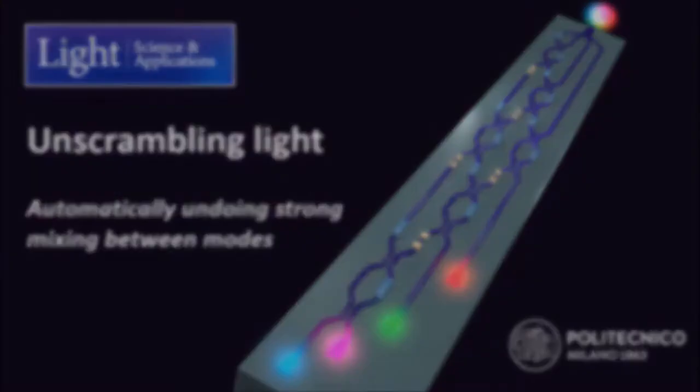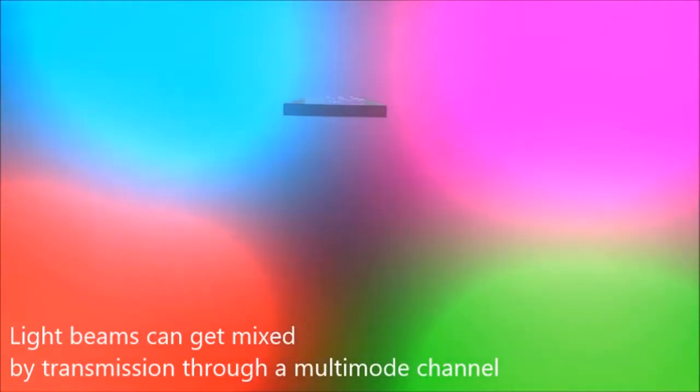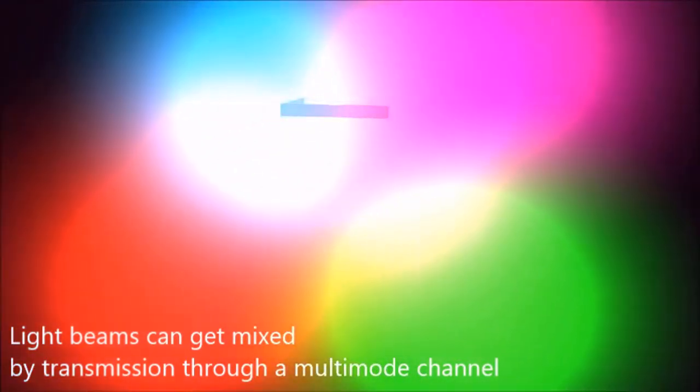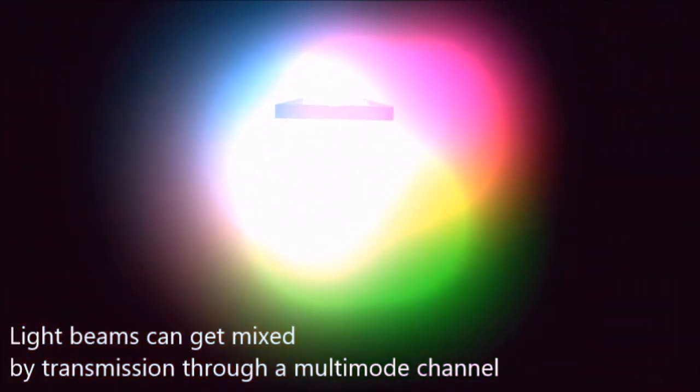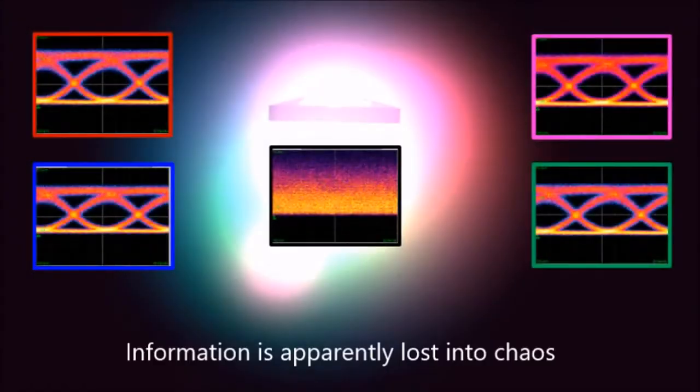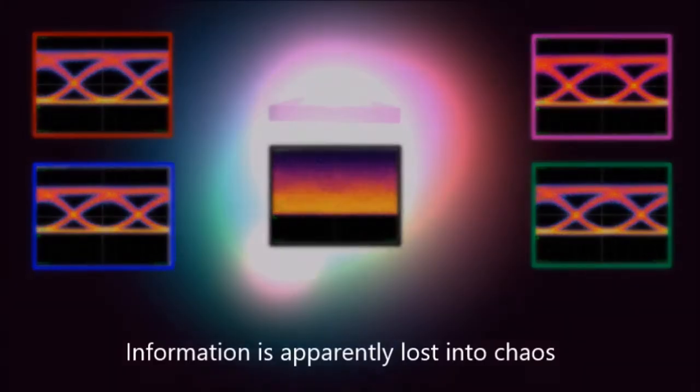When different light beams or modes, like these different colors here, travel through a multi-mode channel, they can become mixed together. Then the information on those beams is apparently lost into chaos.